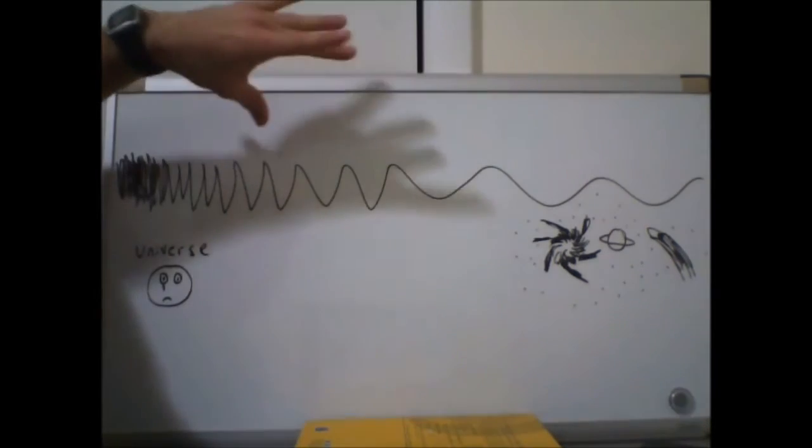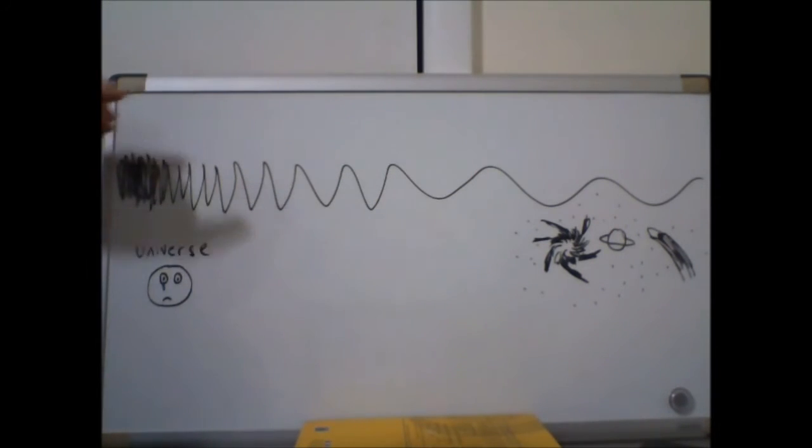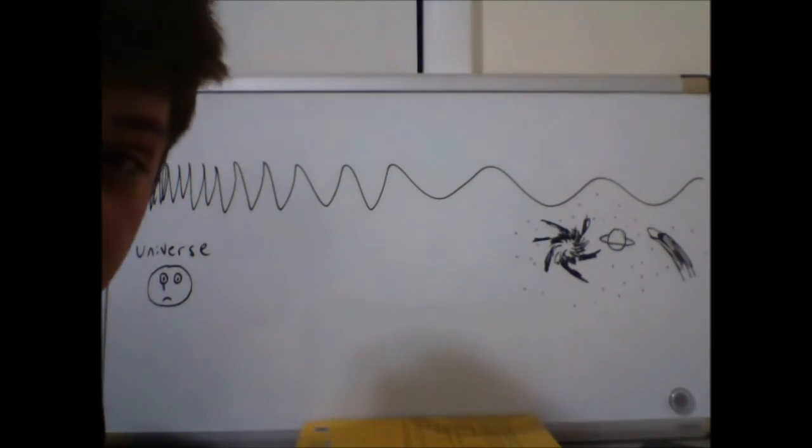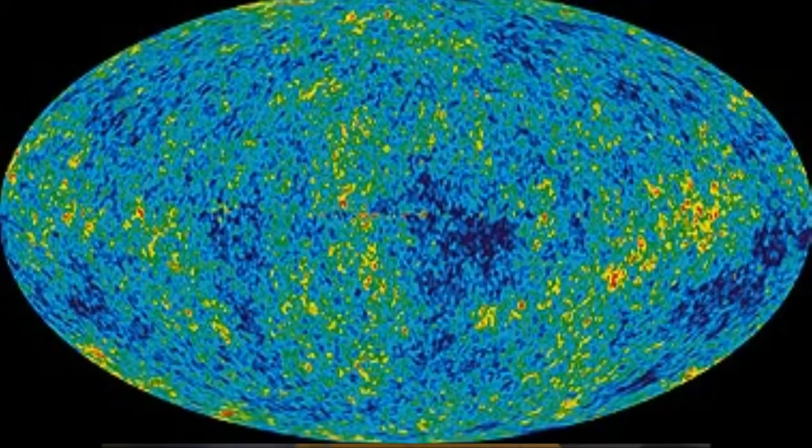And very quickly, and on a very grand scale, space expanded. And what happened is these short-wavelength photons literally got stretched to the point where we have these long-wavelength, low-energy microwaves, filling the entire universe, going in all directions. This leftover radiation from the Big Bang is what's referred to as the cosmic microwave background radiation.